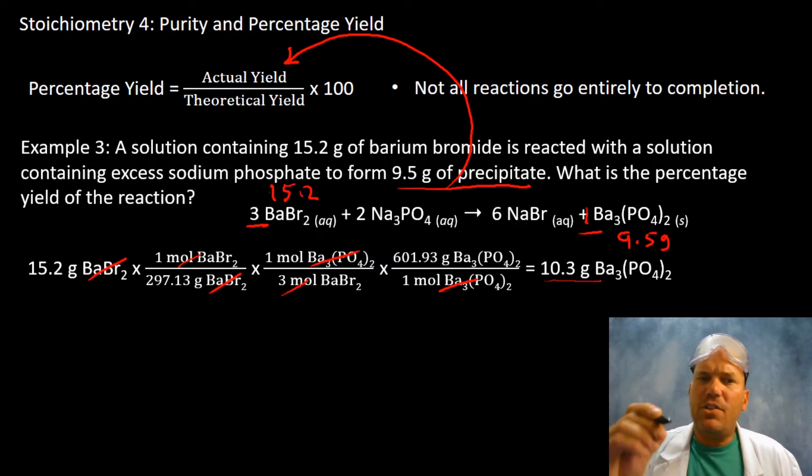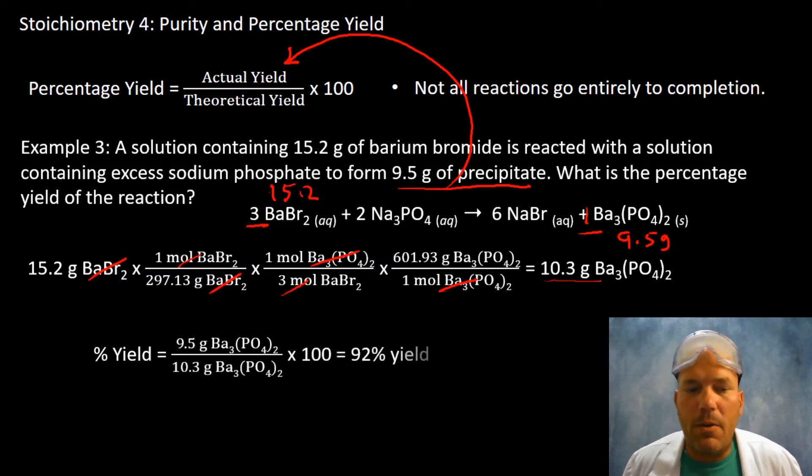But what we actually produce was 9.5. So if you take these numbers and throw them into the equation, plug and chug, you'll see we have a 92% yield in this process.